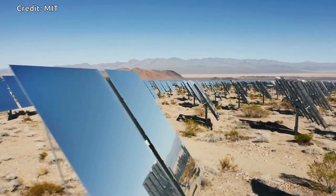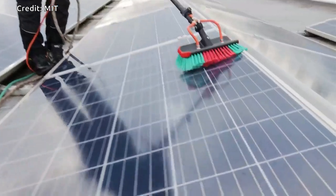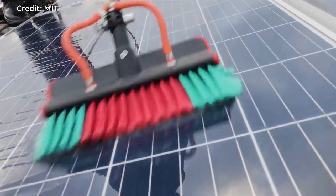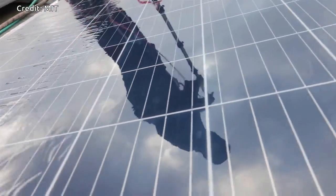But the accumulation of dust on solar panels or mirrors is already a significant issue. It can reduce the output of photovoltaic panels by as much as 30% in just one month.